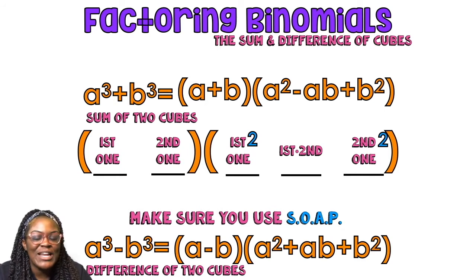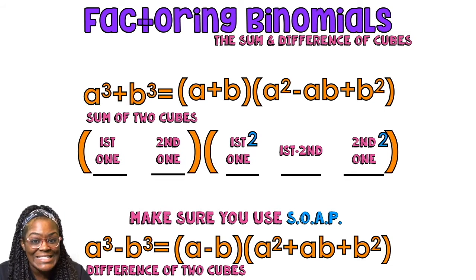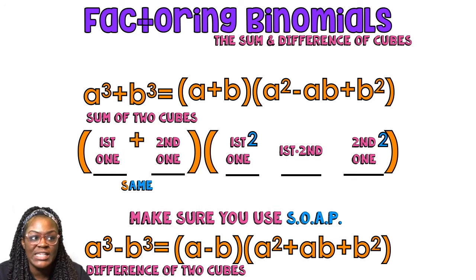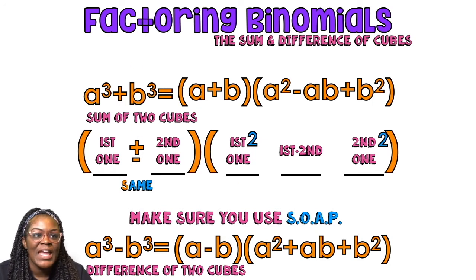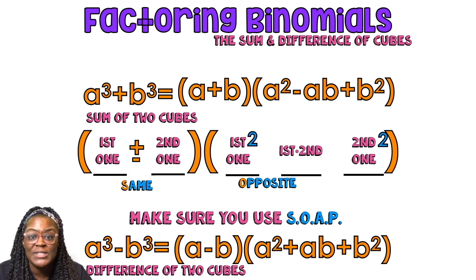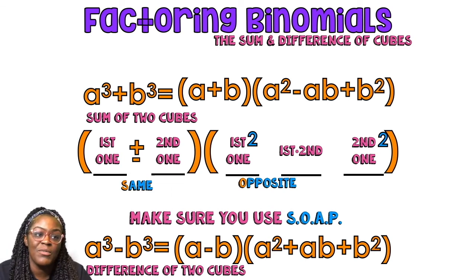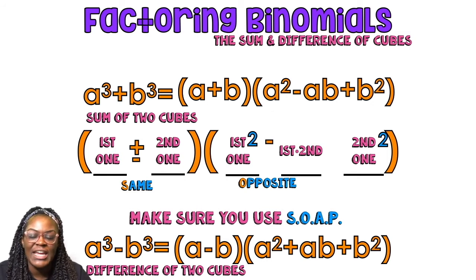When I say use some soap, you don't want to be dirty. You don't want to be nasty. You want to use some soap. The S in soap stands for same — the sign you're going to put in this position is the same sign that you started off with. If you started off with a plus, it's a plus. If you started off with a minus, it's a minus. Opposite — that's the O in soap. The O in soap stands for opposite, so the opposite sign of what you started with. If it was the sum of two cubes, you're going to start with a negative.